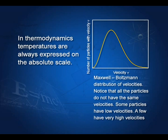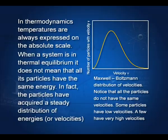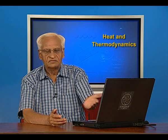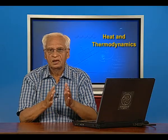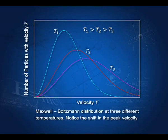It must be mentioned that in thermodynamics, temperatures are always expressed in the absolute scale. Also, when a system is in thermal equilibrium, it does not mean that all its particles have the same energy. In fact, there is an energy distribution given by the Maxwell-Boltzmann law. The Maxwell-Boltzmann distribution at three temperatures shows that in equilibrium, all particles do not have the same velocity — there is a distribution of velocities at that temperature.